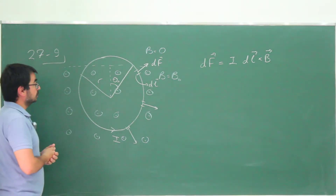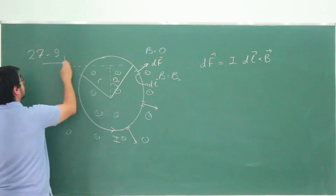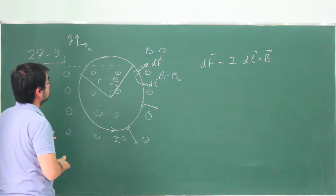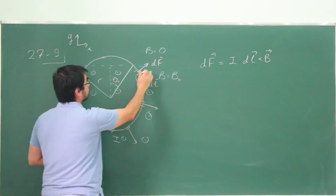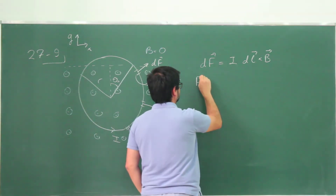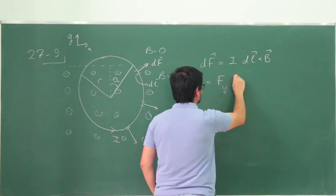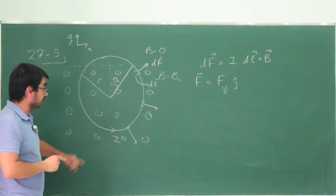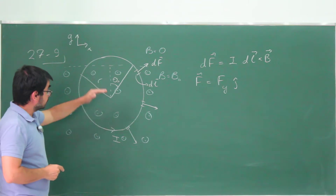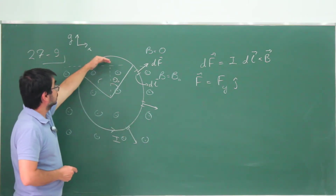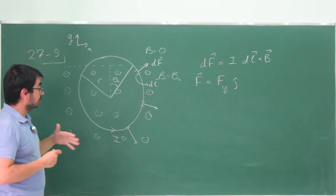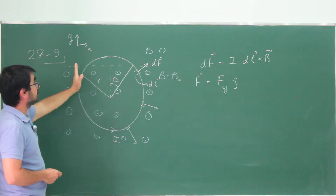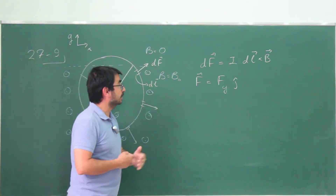You might be tempted to use a symmetry argument and say the right is the same as the left, so any x-component of F cancels, and F must be purely in the y direction. In this case this is correct, but the argument is wrong — the situation is not completely left-right symmetric because of the current. The current breaks the symmetry. However, when you draw the force vectors, they are left-right symmetric, and indeed their x-components must cancel.